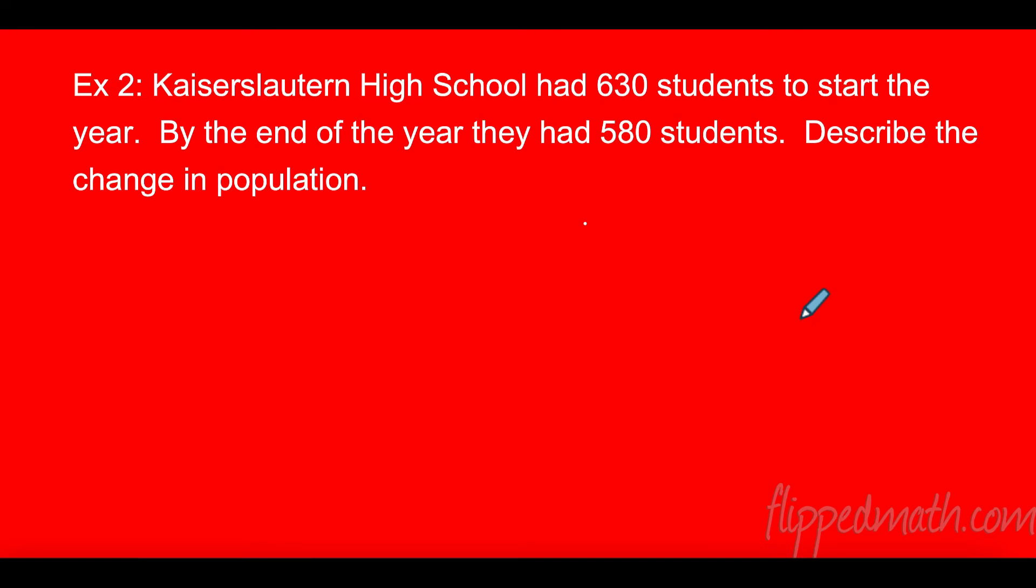Alright, let's take a look at this one. Kaiserslautern high school had six hundred and thirty students to start the year. By the end of the year they had five hundred and eighty students. So we know that it's going down. Describe the change in population. So let's take a look at this. We have our original is 630, so we know that's going to go on the bottom in the denominator and we're going to do 630 minus our new of 580.